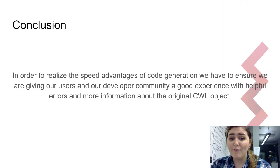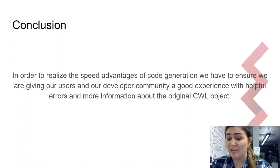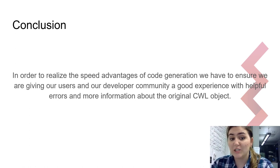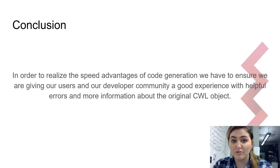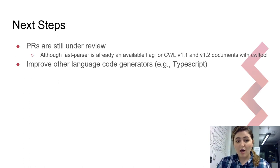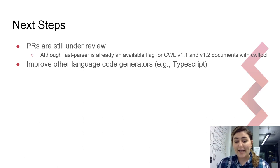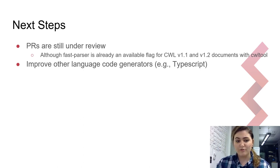In conclusion, to get the speed benefits of code generation in Schema Salad and cwltool, we have to ensure our users and developer community have a good experience with helpful errors and more information about original CWL objects. The PRs with these improvements are still under review, although a fast parser flag is already available for CWL version 1.1 and 1.2 documents in cwltool. We could also make these improvements for other language code generators like TypeScript. Thank you!